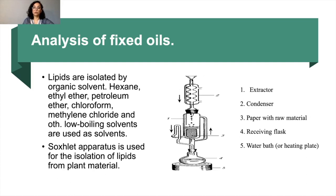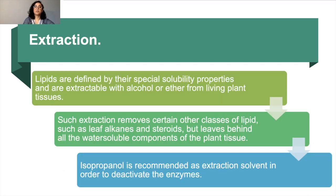A Soxhlet apparatus is used for the isolation of lipids from plant material. This apparatus consists of five parts: the extractor, condenser, paper thimble with raw material, receiving flask, and water bath. Extractions of lipids are defined by their special solubility properties and are extractable with alcohol or ether from living plant tissues. Such extraction removes certain other classes of lipids such as alkaloids and steroids but leaves behind all water-soluble components of the plant tissue. Isopropanol is recommended as extraction solvent in order to deactivate enzymes.